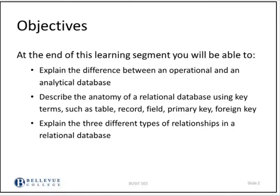At the end of this learning segment, you will be able to explain the difference between an operational and an analytical database. You will be able to describe the anatomy of a relational database using key terms such as table, record, field, primary key, and foreign key. You will be able to explain the three different types of relationships in a relational database.